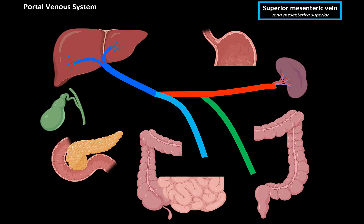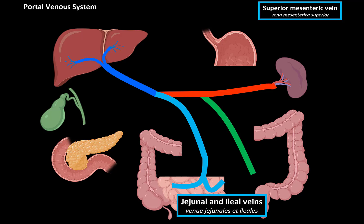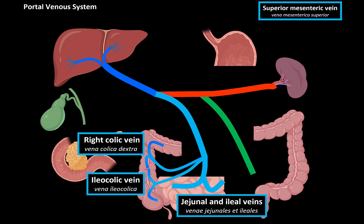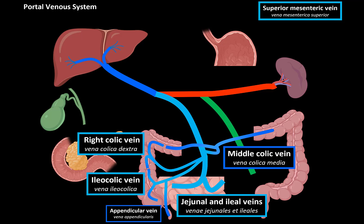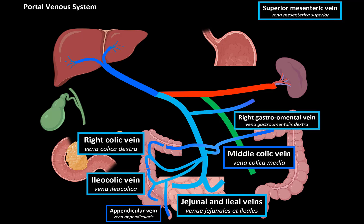The superior mesenteric vein passes on the right side of the superior mesenteric artery and goes behind the pancreas. It terminates into the jejunal and ileal veins, which collect blood from the loops of the jejunum and ileum. It also has the right colic vein for the ascending colon, the ileocolic vein collecting blood from the terminal small intestine and cecum, and a small appendicular vein receiving blood from the appendix. Other tributaries include the middle colic vein collecting blood from the transverse colon, and the right gastro-omental vein collecting blood from the greater curvature of the stomach and the greater omentum. The superior mesenteric receives blood from all these veins and dumps them into the portal vein.